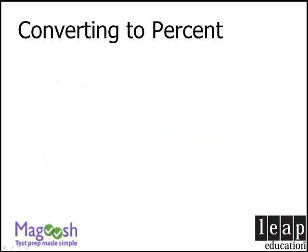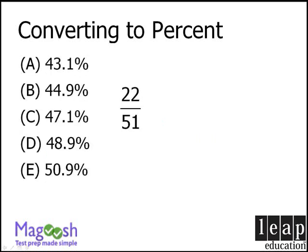Let's try another example. Let's convert this fraction to a percent. We want to rewrite this fraction as a new fraction with denominator 100. To do this, we must multiply 51 by approximately 2. Now 51 times 2 is greater than 100 — 51 times 2 equals 102. So we want to multiply 51 by a number slightly less than 2.